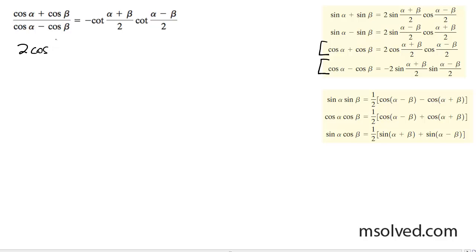For the numerator, alpha plus beta divided by two times the cosine alpha minus beta divided by two all over.